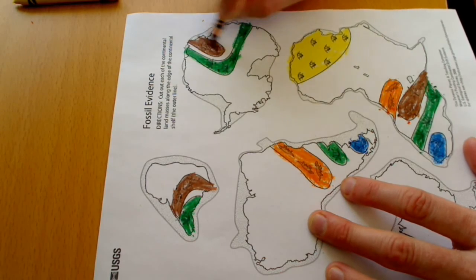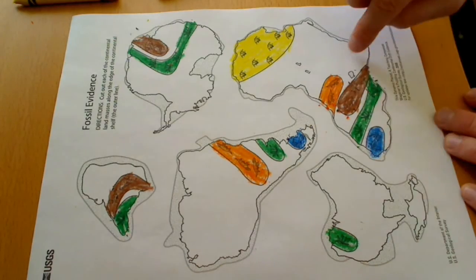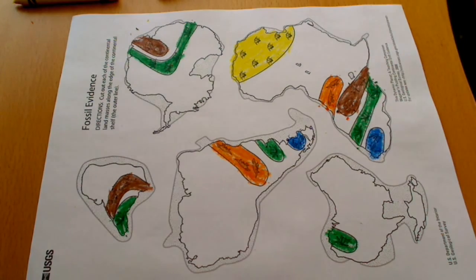All right. So with this, you've actually done all the coloring on this assignment that you need to do. So we've colored in all of our different regions. We've got all the same animals are all matched with the same color.